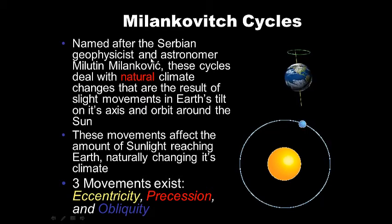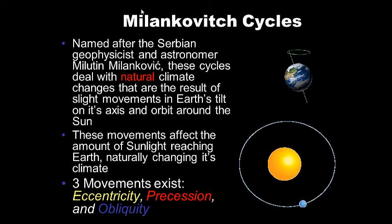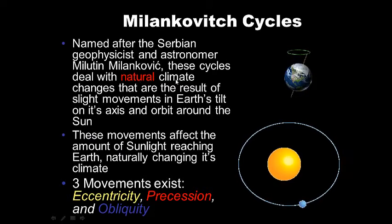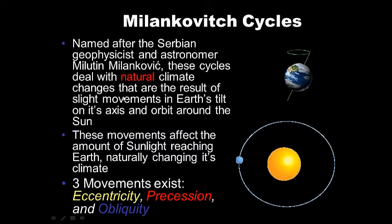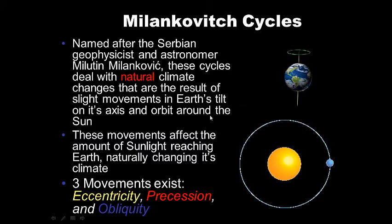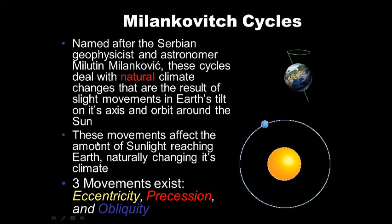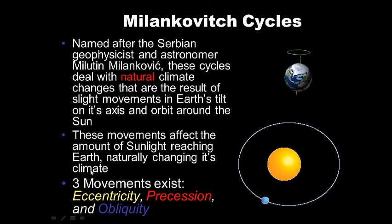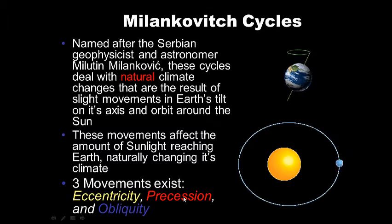Milankovitch cycles — named after the Serbian geophysicist and astronomer Milutin Milanković. These cycles deal with natural climate changes that are the result of slight movements in Earth's tilt and its orbit around the sun. These movements affect the amount of sunlight reaching Earth, naturally changing its climate. Three movements exist: eccentricity, precession, and obliquity.